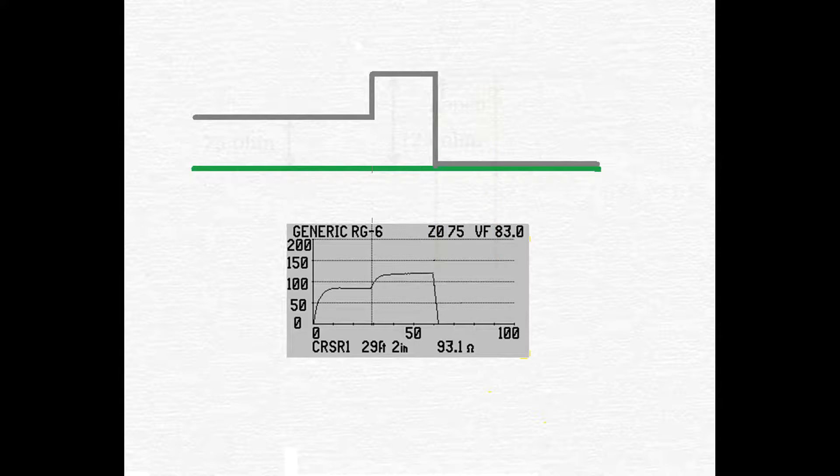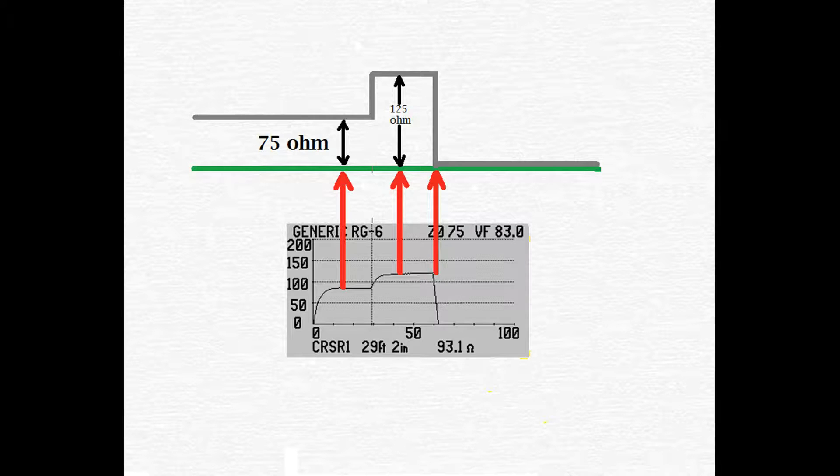Let's take a look when the two wires are shorted together. The trace starts out just like before. 75 ohms for the first section of wire. 125 ohms for the second section of wire. But the place where it's shorted, there is no impedance. So the trace on a TDR will go to zero.